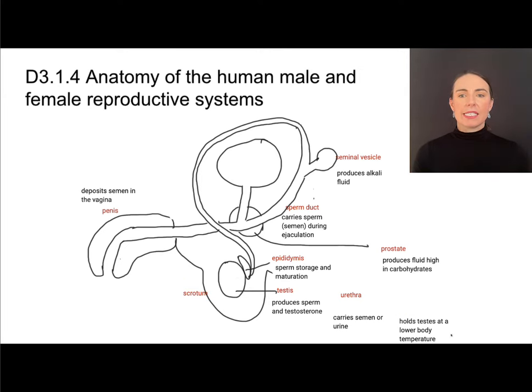If no pregnancy occurs, the corpus luteum will break down. When the corpus luteum breaks down, progesterone levels fall, meaning the endometrium lining cannot be maintained and it is shed as menstruation. This also means there is nothing inhibiting the pituitary hormones, so FSH and LH start to go up and we begin the cycle all over again.